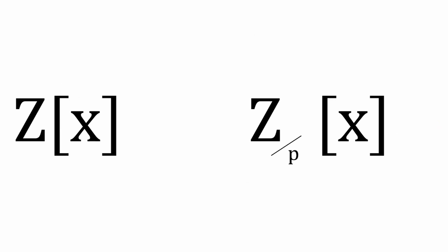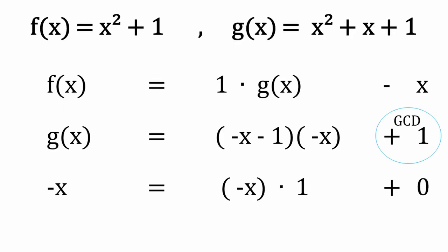We are going to be working with Z mod some number adjoin X, so all the coefficients will be modulo some prime number. The reason why this algorithm is important is that it allows us to find inverses for any polynomial inside a quotient ring. That quotient ring is Z adjoin X, quotiented by the ideal of (x^n minus 1), where n is prime.